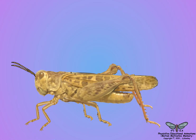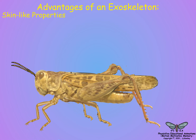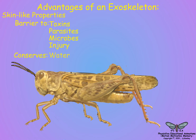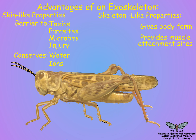Insects are covered by an exoskeleton that serves as both a skin and a skeleton. The properties of the exoskeleton are a major factor for the success of insects. Like a skin, the exoskeleton serves as an interface between the insect and its environment, acting as a barrier to environmental toxins, infection by parasites and microbes, and preventing injury and the loss of water and ions. Like a skeleton, it gives the insect body form and serves as an attachment point for muscles.